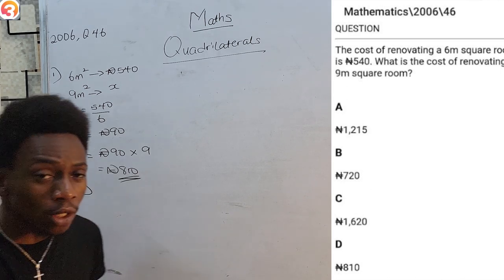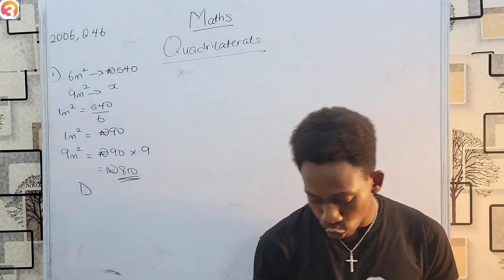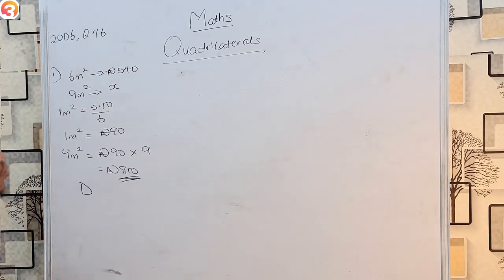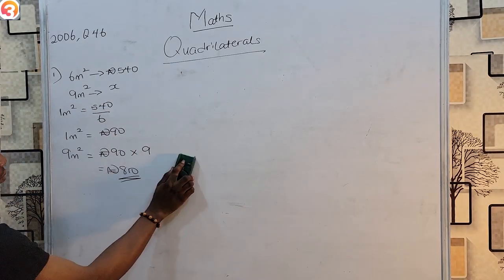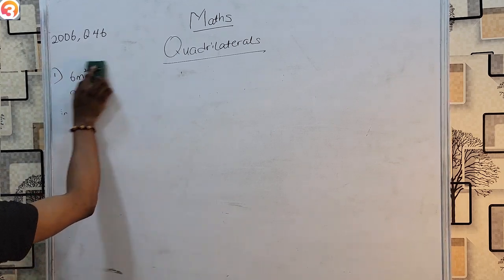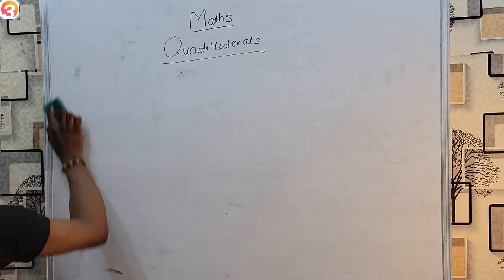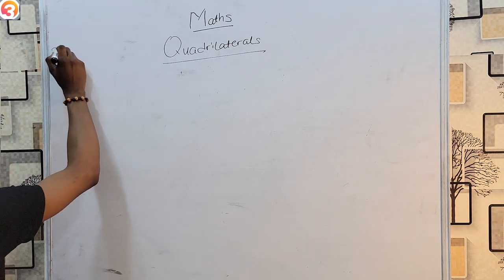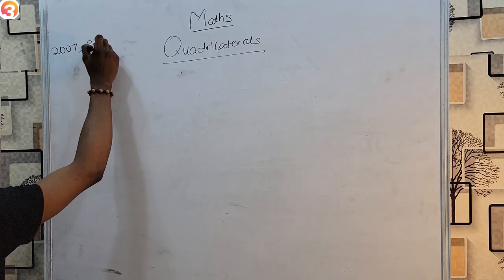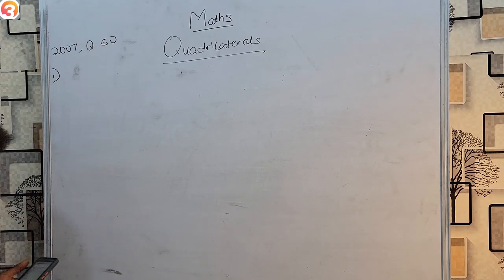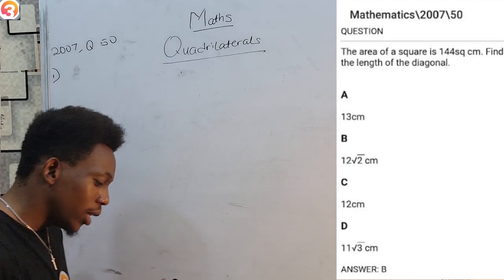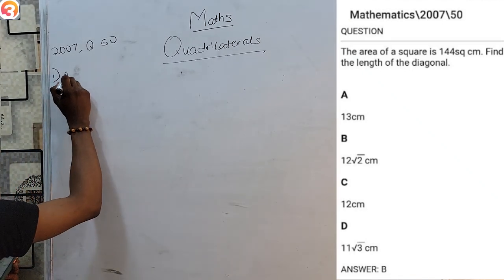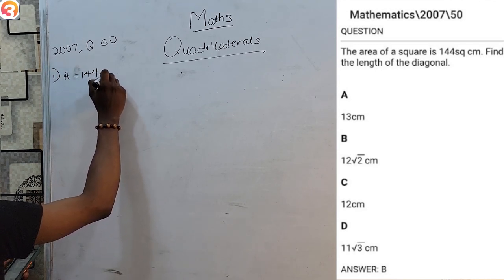Our next question is from the year 2007, question 50. This one says: the area of a square is 144 cm squared. Find the length of the diagonal. If I draw a square with all sides L and a diagonal D — the area is 144, and I want to find the diagonal. If I take just half of this square, that gives me a right-angled triangle, and with Pythagoras' theorem, if I know both sides I can get my diagonal.